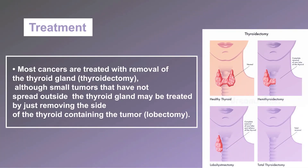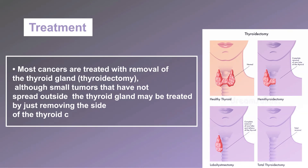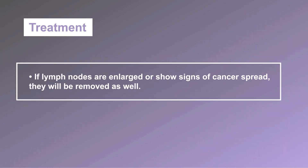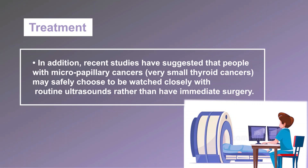Most cancers are treated with removal of the thyroid gland — thyroidectomy — although small tumors that have not spread outside the thyroid gland may be treated by removing only the side of the thyroid containing the tumor — lobectomy. If lymph nodes are enlarged or show signs of cancer spread, they will be removed as well. Recent studies have also suggested that people with micropapillary cancers — very small thyroid cancers — may safely choose to be watched closely with routine ultrasounds rather than undergo immediate surgery.